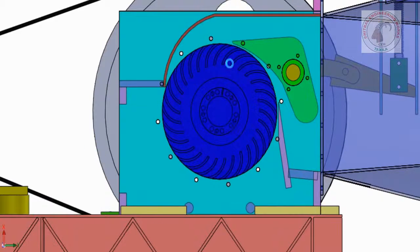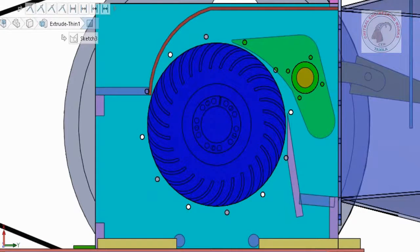This is the inside arrangement of runner, both fixed and adjustable guide vanes and top cover plate.